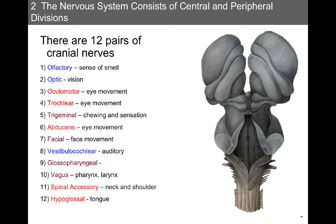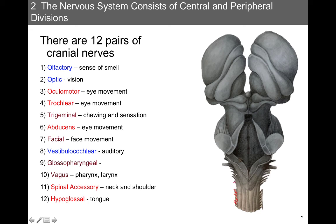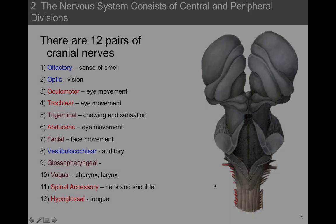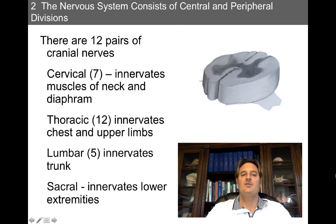If you look over here, you can see a brain stem viewed from the posterior aspect. These are all cranial nerves originating from the brain stem — their nuclei are actually buried inside the brain stem. There are 12 pairs of cranial nerves.